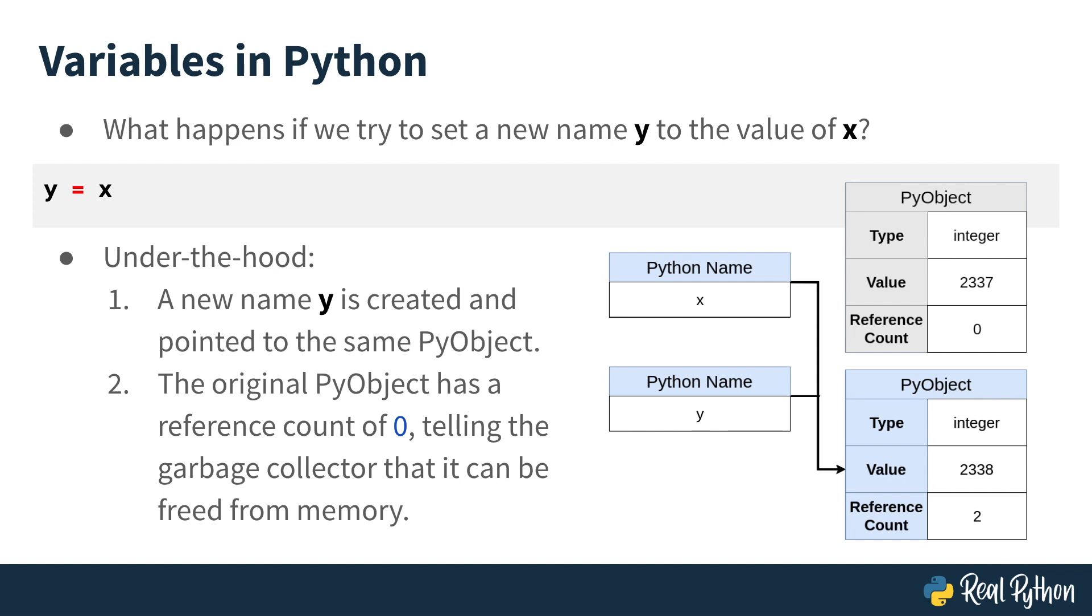Let's try setting a new name y to x. Instead of the value of x being copied to a new space in memory for y, like with C, Python simply creates a new name and points it to the same PyObject that x was referencing. As such, its reference count increases to 2.